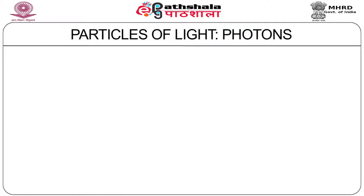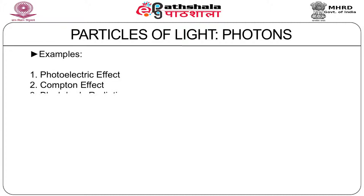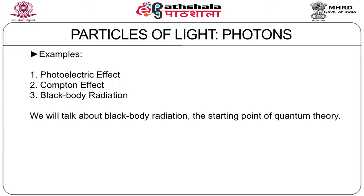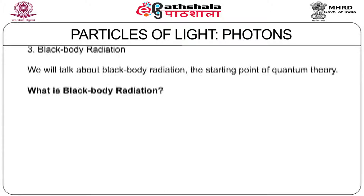The first item: what are the particles of light? The particles of light are photons. Examples of phenomena explained by photon nature are the photoelectric effect, the Compton effect, and blackbody radiation. All these phenomena can be explained by assuming that light consists of particles or photons. We will mainly focus on blackbody radiation, since this is considered the starting point of modern quantum theory.